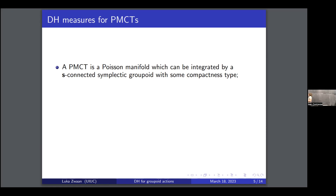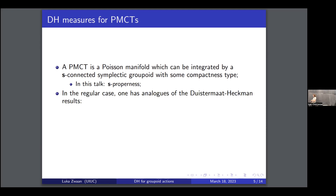In this talk I will restrict to what's called source-properness: you want the source map — and also the target map automatically — to be a proper map. In this context, for regular PMCTs, you can write down Duistermaat-Heckman results. Basically, you have linear variation and you have a polynomial Duistermaat-Heckman measure.